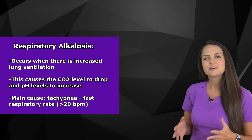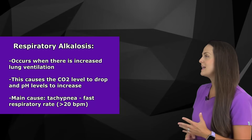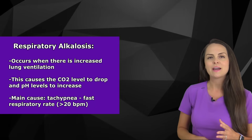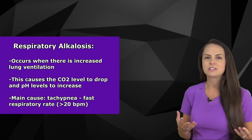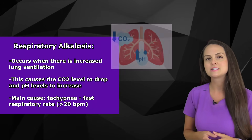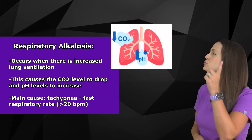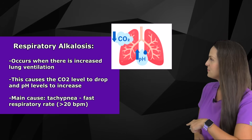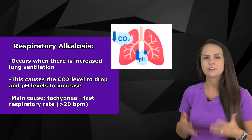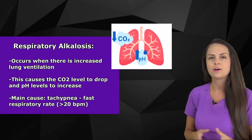Respiratory alkalosis occurs in the body whenever we have increased lung ventilation. Whenever a patient is increasing their lung ventilation, this causes the CO2 level — the carbon dioxide level — to drop down. But it causes the pH level to increase, so we now have an alkalotic state in the body.